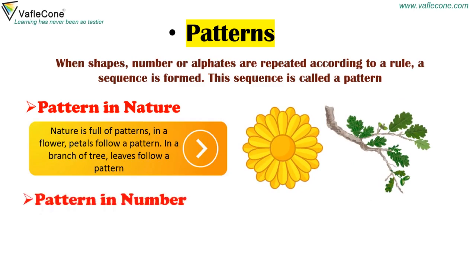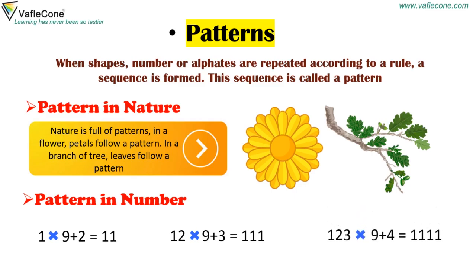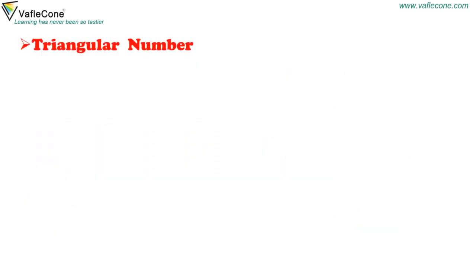Pattern in numbers. 1 x 9 + 2 = 11. 12 x 9 + 3 = 111. 123 x 9 + 4 = 1111. Triangular numbers.